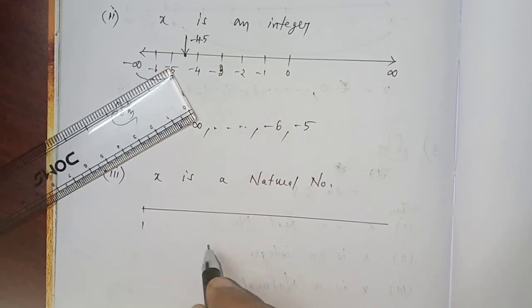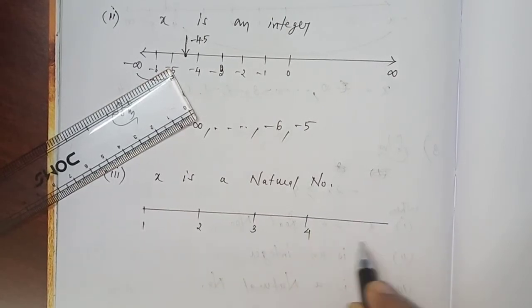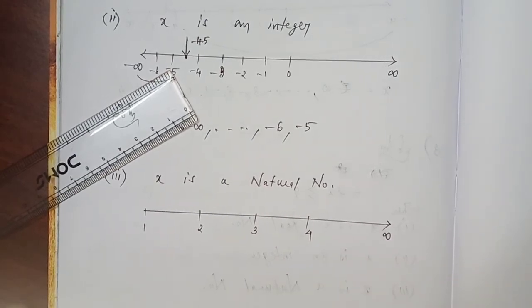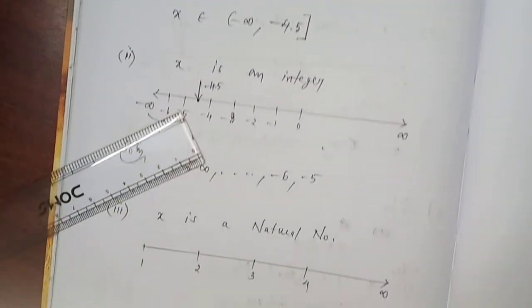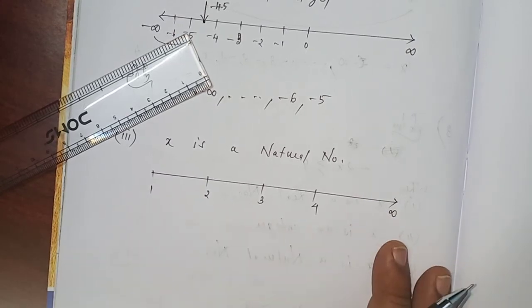Natural number starting 1, then 2, then 3, then 4, etc. up to plus infinity. But we have the number -4.5. -4.5 nowhere in this region. -4.5, no negative number at all.